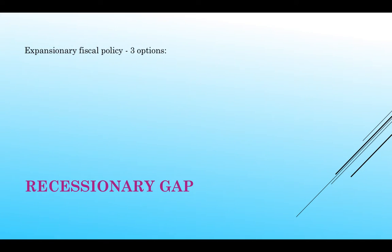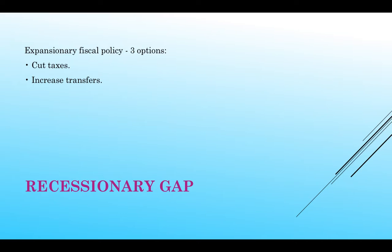Expansionary fiscal policy has three tools. The first is cutting taxes — lowering taxes. The second is increasing transfer payments, which is essentially increasing government spending. And the third is increasing government spending on goods and services.